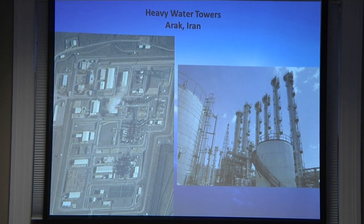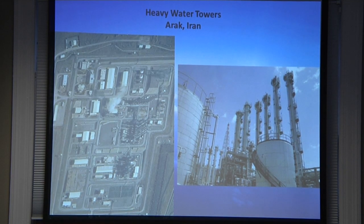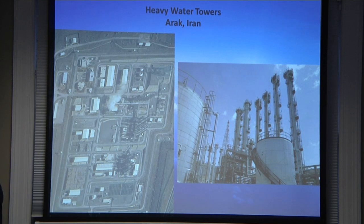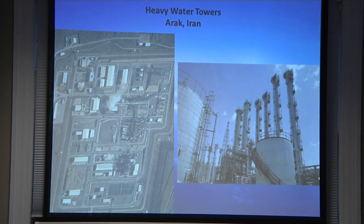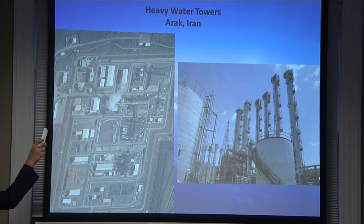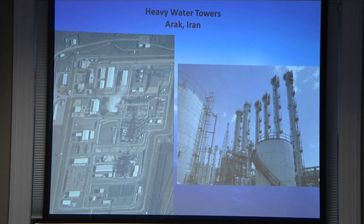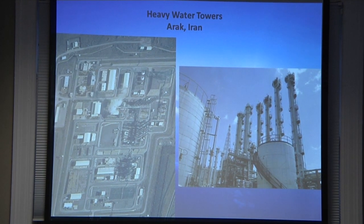Some sites require both direct recognition and inference from surroundings. Heavy water production plants are usually easy to distinguish because they have a signature few other plants share: the heavy water towers. But if you look at this image, you'll also see the fencing, a lot of support area, and many support buildings — all elements that aid your analysis.